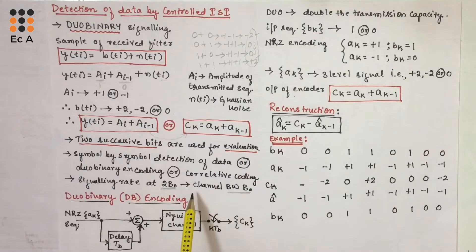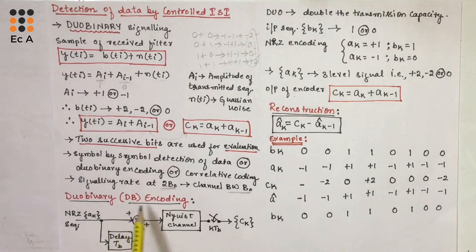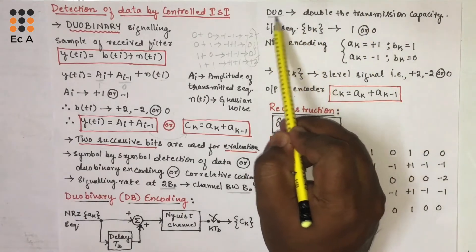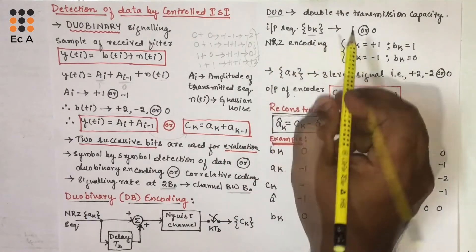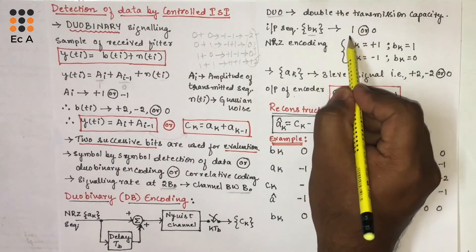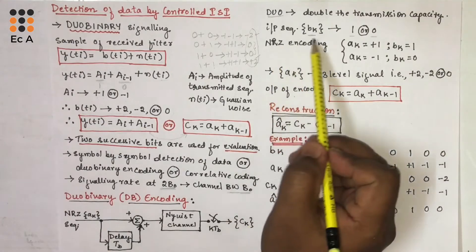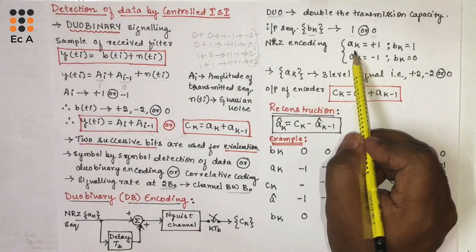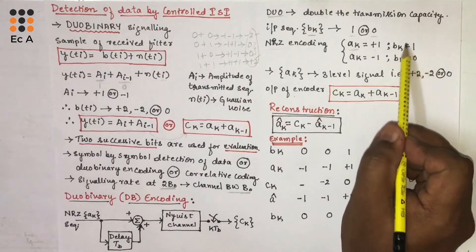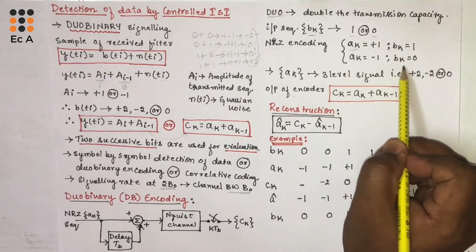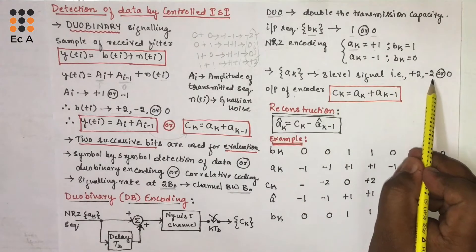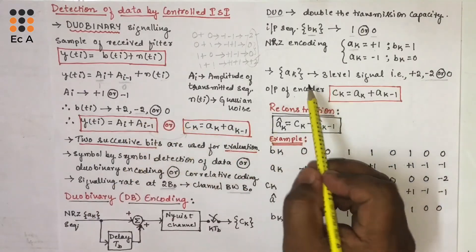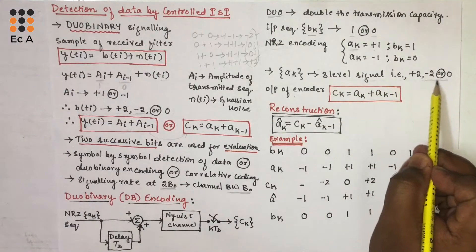Let us understand Duobinary encoding, commonly known as DB encoding. The word 'Duo' means double the transmission capacity of a binary system. Consider the input sequence as BK; since we are taking the binary sequence, the input will have values 1 or 0. If we perform NRZ encoding, we get signal AK, where AK = +1 if the input is 1 and AK = -1 if the input is 0. This encoder accepts sequence AK and converts it into a three-level signal: +2, -2, or 0.